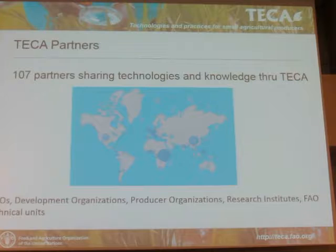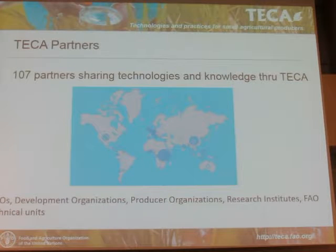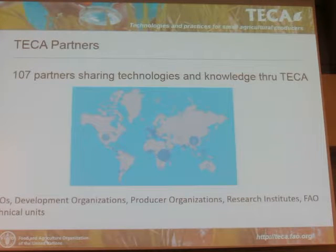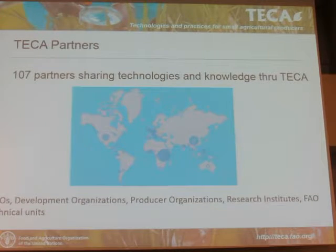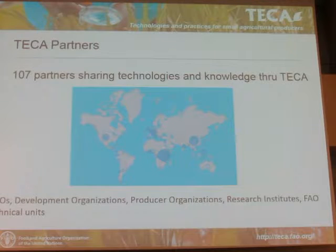Where does the information available in TECA come from? The technologies and practices are provided by TECA partners — entities that generate knowledge and have implemented innovations for beekeeping. They include development organizations, for example practices implemented through projects, research institutes and universities with research outcomes, NGOs, beekeeping associations, and biotechnical units.